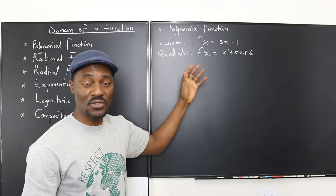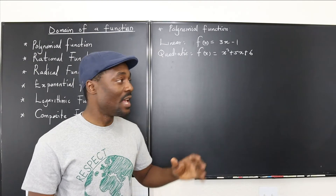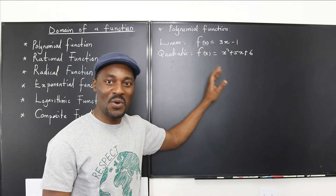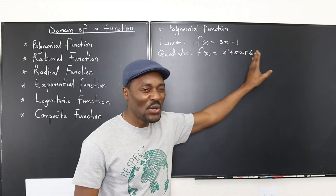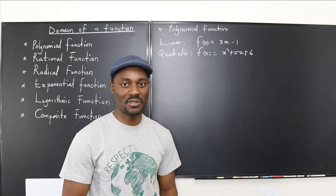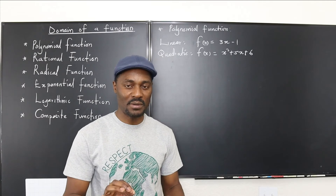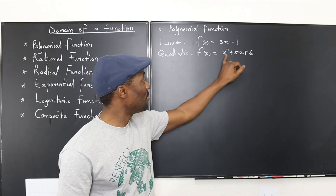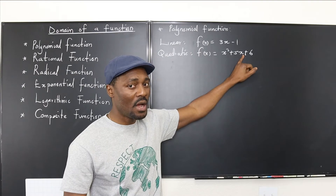You can have a cubic, a quartic, a quintic, where the powers change from 1 to 2 to 3 to 4 — or any value. As long as it looks like this, it is a polynomial function. So the question to ask is: is there any real number I'm going to plug into this that will not give me a real output? No.